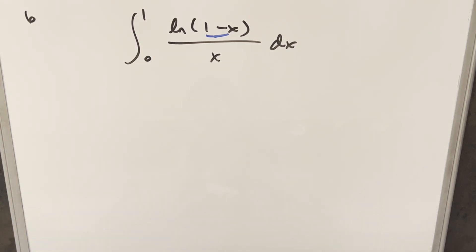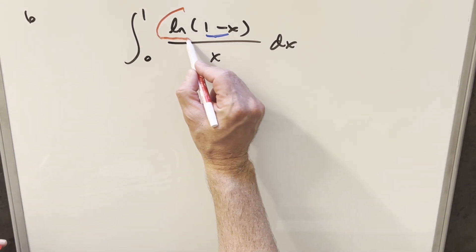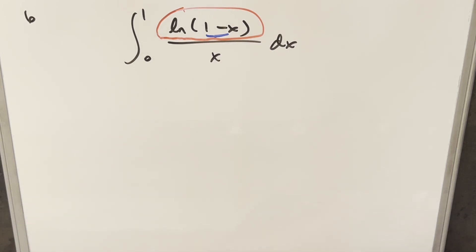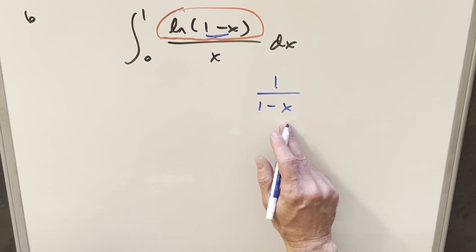But the thing to notice is this numerator right here, we can actually relate this back to a geometric series. We have our geometric series formula for the one minus x. If we look at one over one minus x,